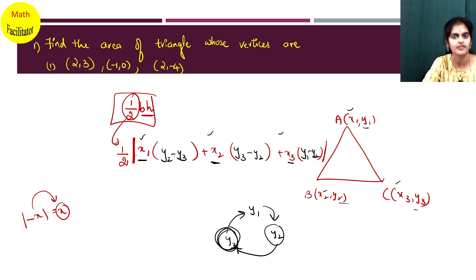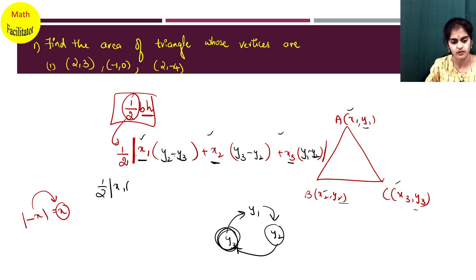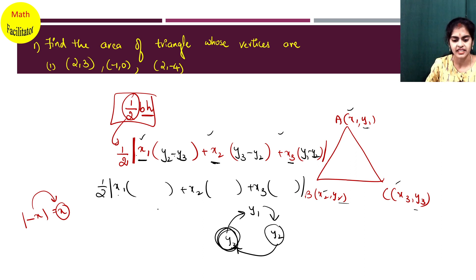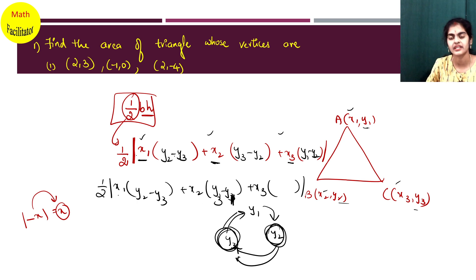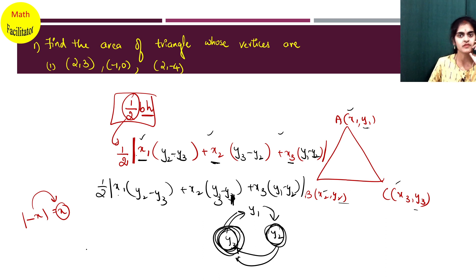This is the easiest method to remember the formula. So: half modulus of x1 into (y2 minus y3) plus x2 into (y3 minus y1) plus x3 into (y1 minus y2). When you have x1, you take y2 minus y3. When you have x2, you remove y2 and take y3 minus y1. When you have x3, you remove y3 and take y1 minus y2.